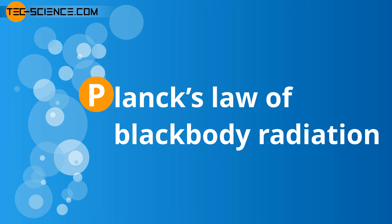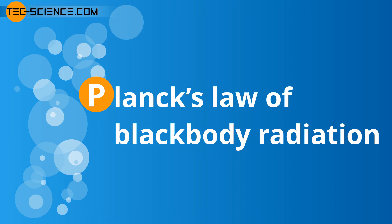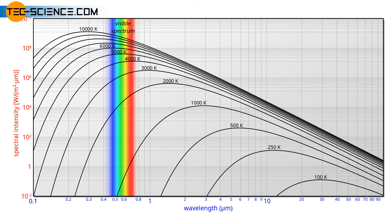Planck's law of blackbody radiation. The emitted wavelength spectrum of a blackbody could not be explained for a long time. Until then, it was assumed that energy would be distributed continuously. It was only by introducing discrete energy levels that the physicist Max Planck succeeded in describing blackbody radiation mathematically. Although he did not know how to interpret the introduction of discrete energy levels physically at first, he laid the foundation for quantum mechanics.